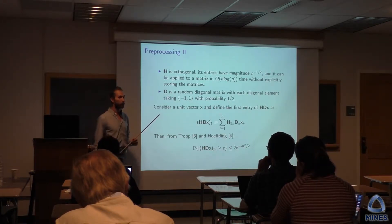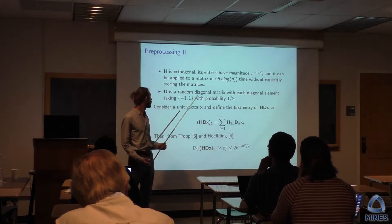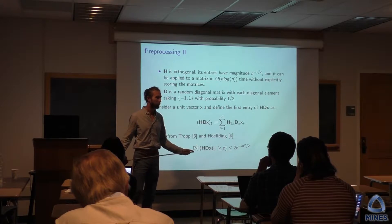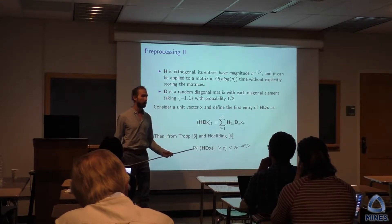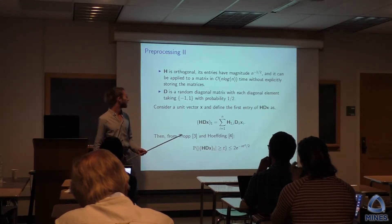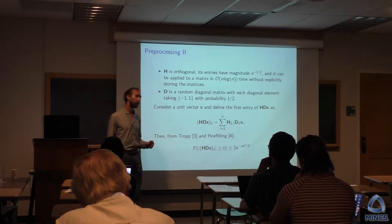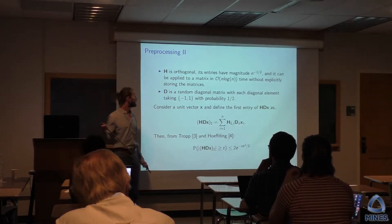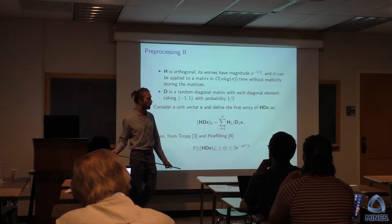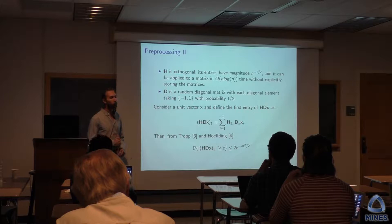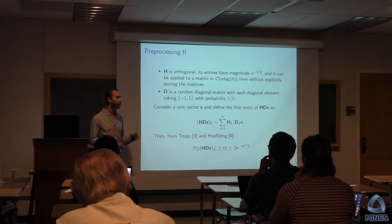P consists of two matrices. First, H — the deterministic Hadamard transform. It's actually orthonormal, so it's not going to change the rank of our matrix or change the solution. Second, the entries are all of the same magnitude. And most importantly for our purposes, you don't have to store the entire matrix to apply it — as long as you can store a single vector of size n, you can apply the Hadamard transform without constructing it, in order n log n time. So it's very fast.